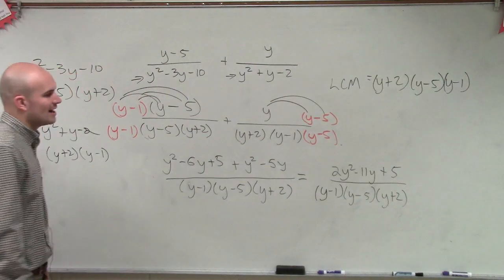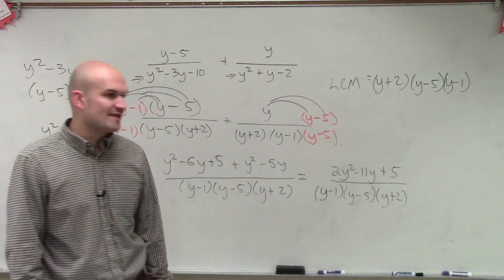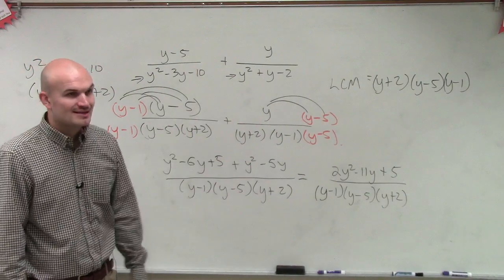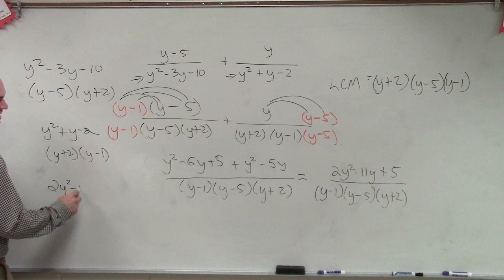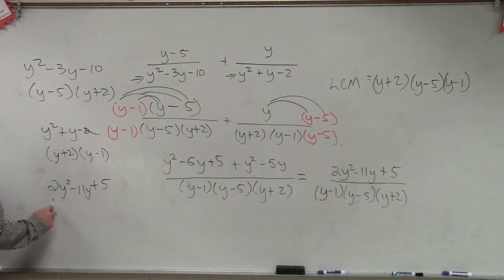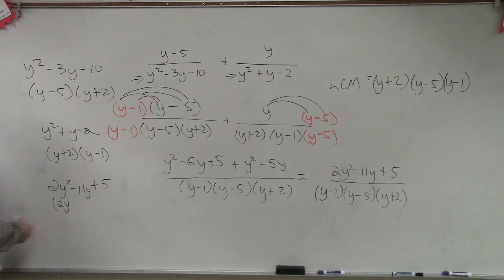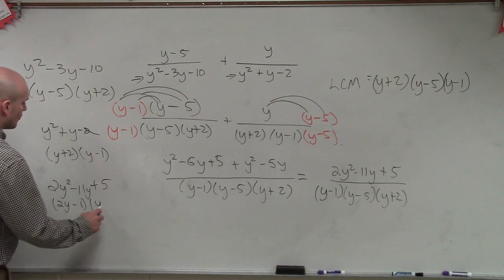What two numbers could I multiply that would give me a positive 5 when added would give me negative 11? And guess what, ladies and gentlemen? This actually can be factored. 2y squared minus 11y plus 5. By practicing my factoring, I could say this is 2y minus 1 times y minus 5.